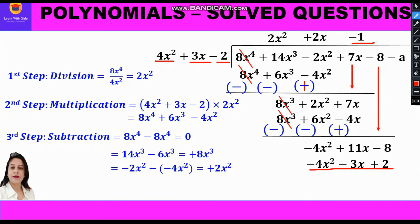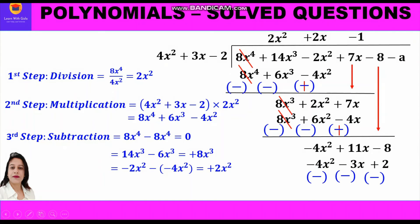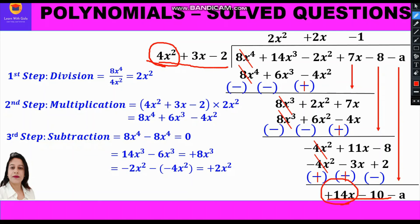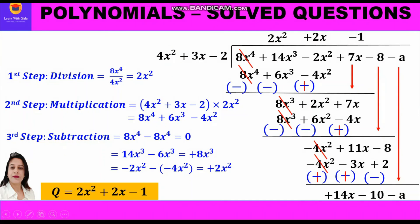We have essentially written the divisor with changed signs, since we multiplied by minus 1. Now for subtraction, change the signs — minus becomes plus and plus becomes minus. Minus 4x² and plus 4x² cancel. 11x plus 3x gives 14x, and minus 8 minus 2 gives minus 10. We bring down minus a. We cannot continue long division further, as the degree of the remainder (degree 1) is less than the degree of the divisor (degree 2). So we stop, giving quotient 2x² plus 2x minus 1 and remainder 14x minus 10 minus a.